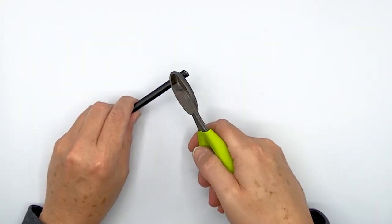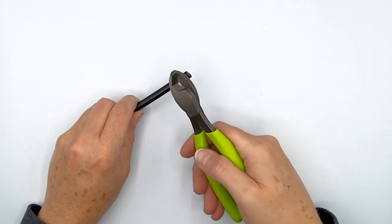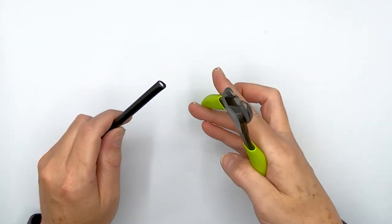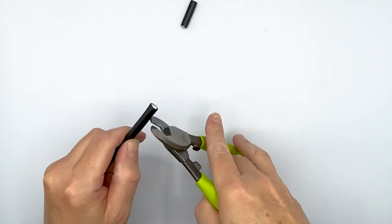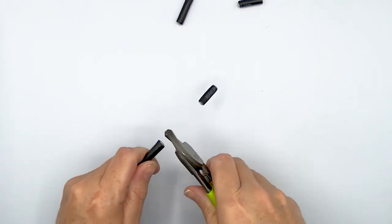This is quad shield coaxial cable, solid copper center conductor, and we'll just show you how quickly you can make work of a nice coaxial cable here. A really nice thick one.